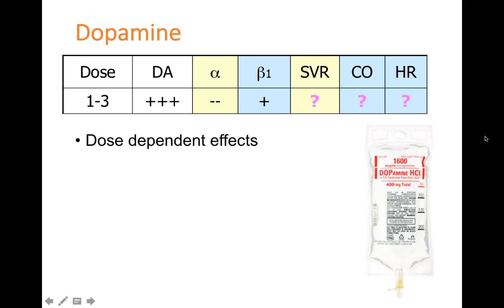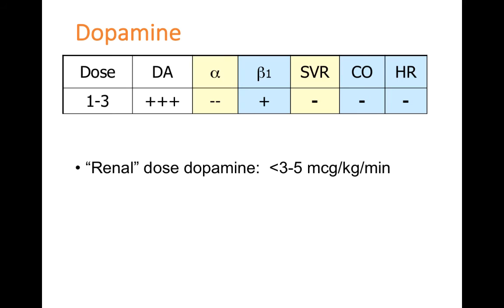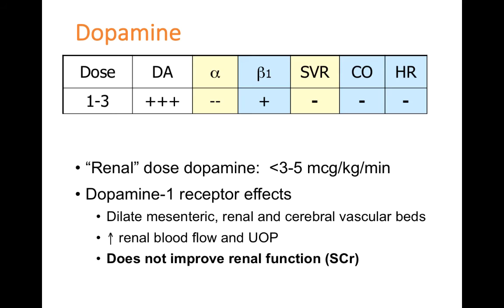Like epinephrine, dopamine's receptor effects vary by dose. At low doses of 1 to 3 mcg/kg/min, you primarily activate dopamine-1 receptors — sometimes called 'renal dose dopamine' — which dilates vessels feeding the kidneys, increases renal blood flow, and increases urine output. However, when studied in the literature, renal dose dopamine does not improve serum creatinine, does not prevent progression to kidney disease, and does not prevent dialysis. Therefore, low-dose dopamine just to protect the kidneys is not recommended.